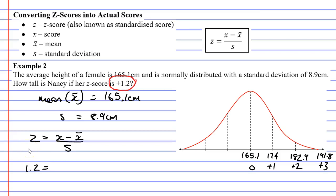I don't know my score. I don't know what x is. My score is going to be the height of Nancy, or how tall Nancy is. And then I'm going to subtract the mean or average, x-bar, the average being 165.1. I'm going to put all of this over s, our standard deviation of 8.9.